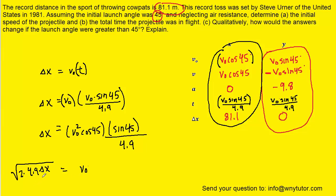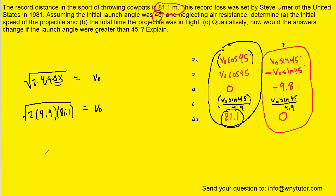All we have to do is plug in the displacement. We can see the displacement in the x direction was 81.1. When you crunch that down you should get approximately 28.2 meters per second. This is the correct answer to part a.